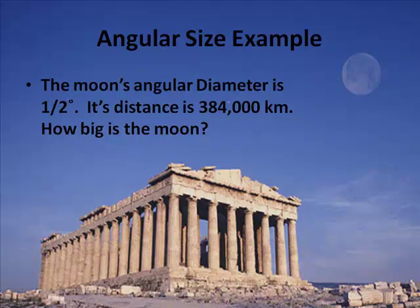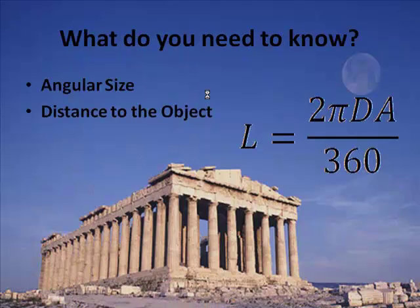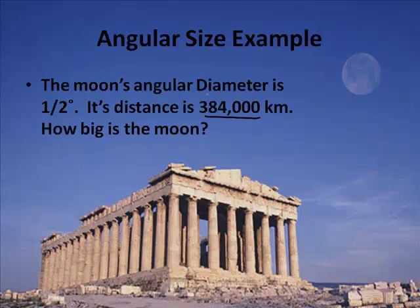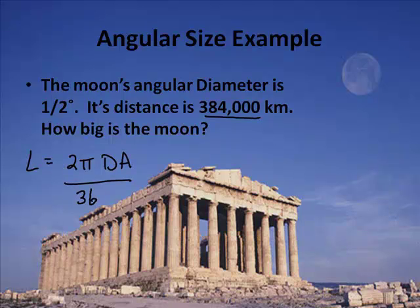Now let's do an example. The moon's angular diameter is one-half degree. Its distance is 384,000 kilometers. How big is the moon? What's our equation? That's the L thing — L equals 2πdA. So we have L equals 2πdA over 360.